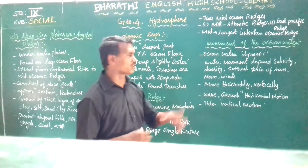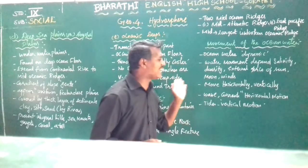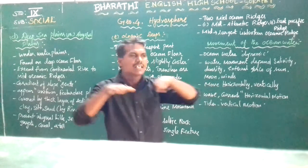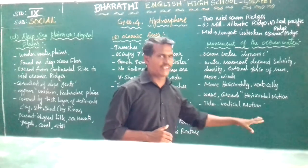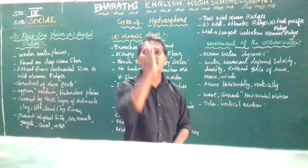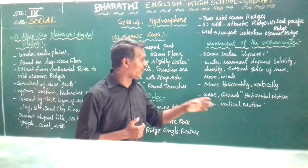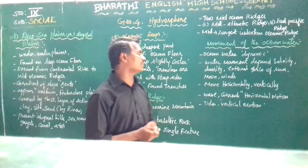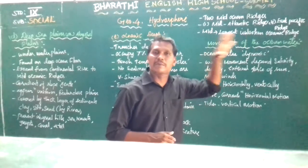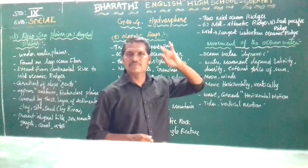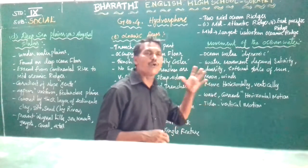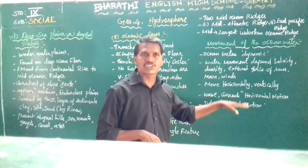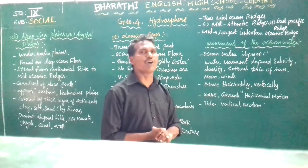Ocean currents move the water in a horizontal motion, also called sideway motion. If the water moves vertically, it is called vertical motion. So the movement of ocean water is dynamic, and it moves both horizontally and vertically depending on the density and external forces of the sun, moon, and wind.